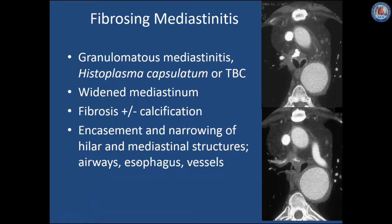Fibrosing mediastinitis is a granulomatous mediastinitis typically caused by histoplasmosis or tuberculosis. There is typically widening of the mediastinum caused by deposition of fibrosis within the mediastinum, which may calcify and encase normal structures, causing narrowing of the trachea, esophagus, or vascular structures. In this case, the carina is distorted, the proximal main bronchi are narrowed, and soft tissue extends into the subcarinal region encasing the right lower lobe bronchus as well.